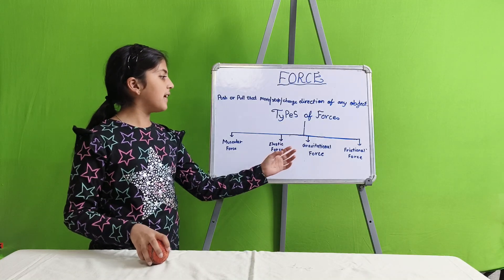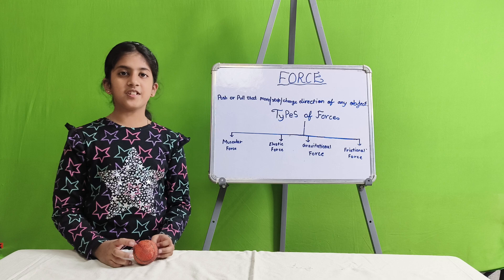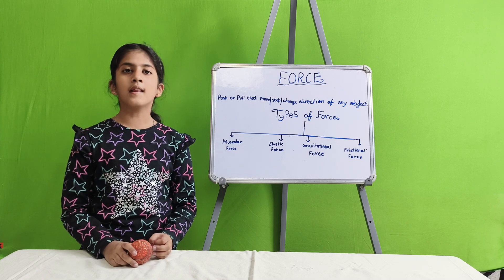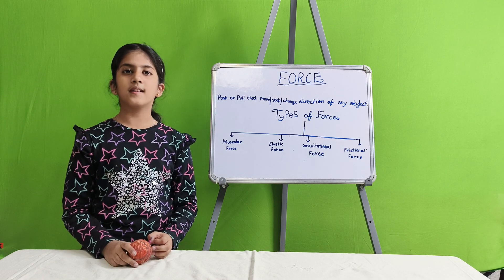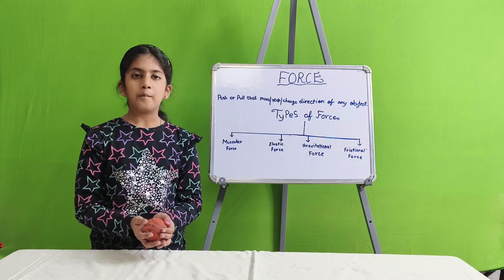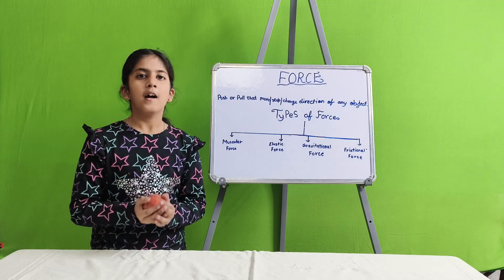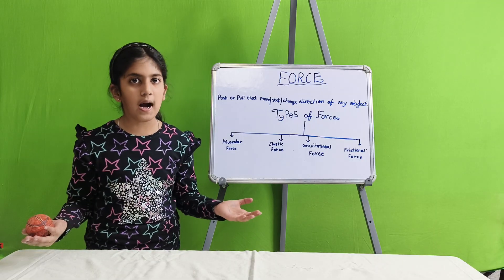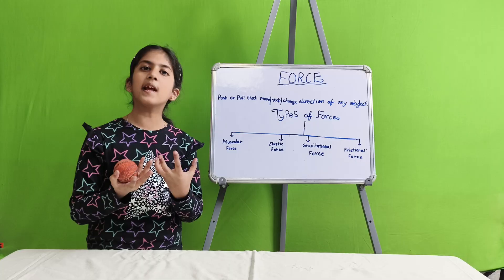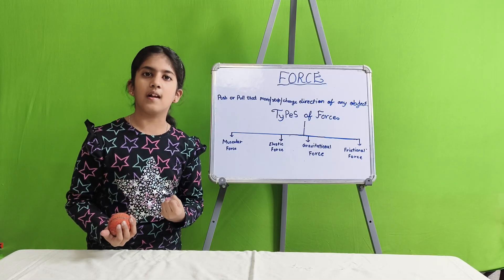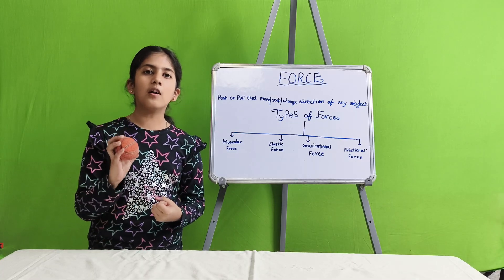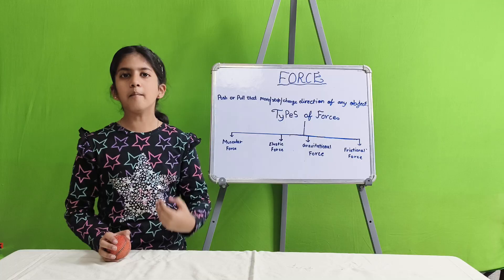Next is gravitational force. Gravitational force is the force when Earth pulls objects towards itself. For example, I throw this ball up. It will come down. Why? Because Earth is pulling the objects towards it. So this ball didn't remain up, it came down.